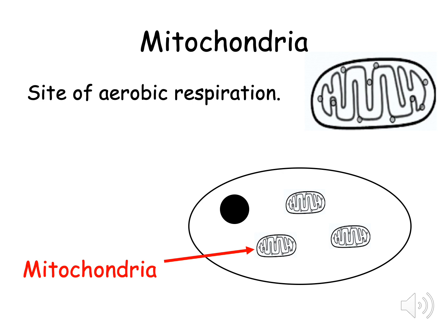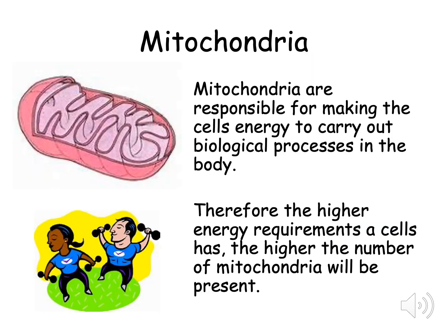The final organelle is called the mitochondria. The main function of the mitochondria is to create energy through a process called aerobic respiration. It is the site of aerobic respiration. Mitochondria are represented by oval shaped structures with squiggly lines within it as shown in the diagram on the PowerPoint.